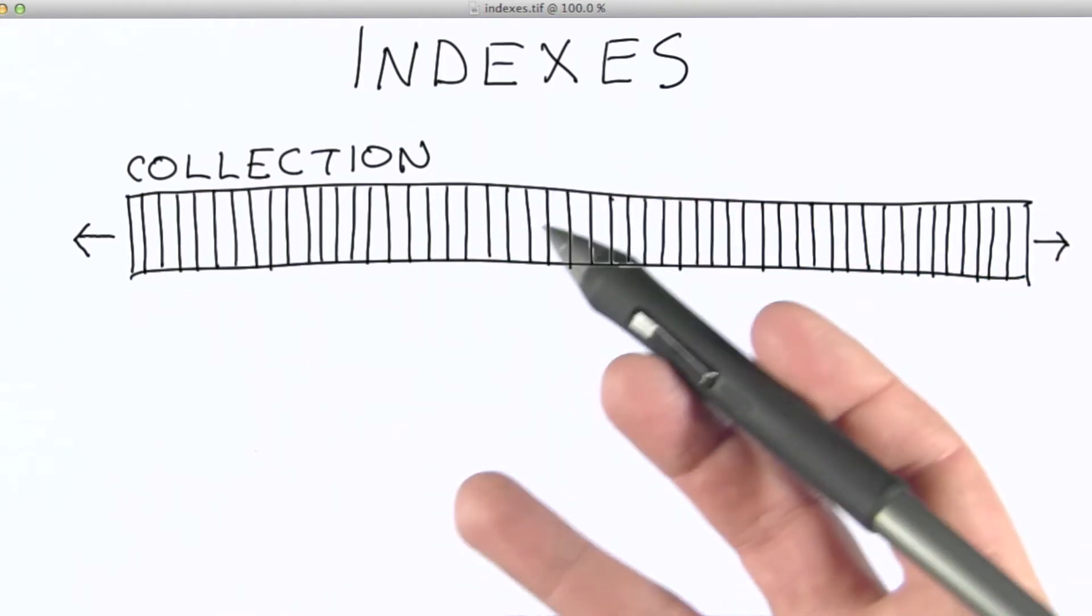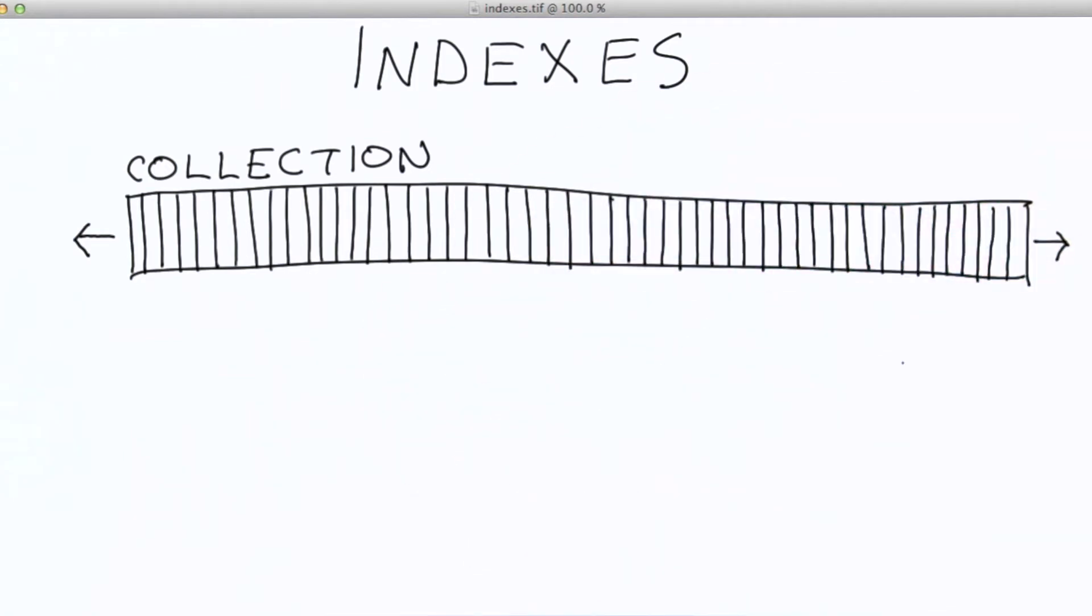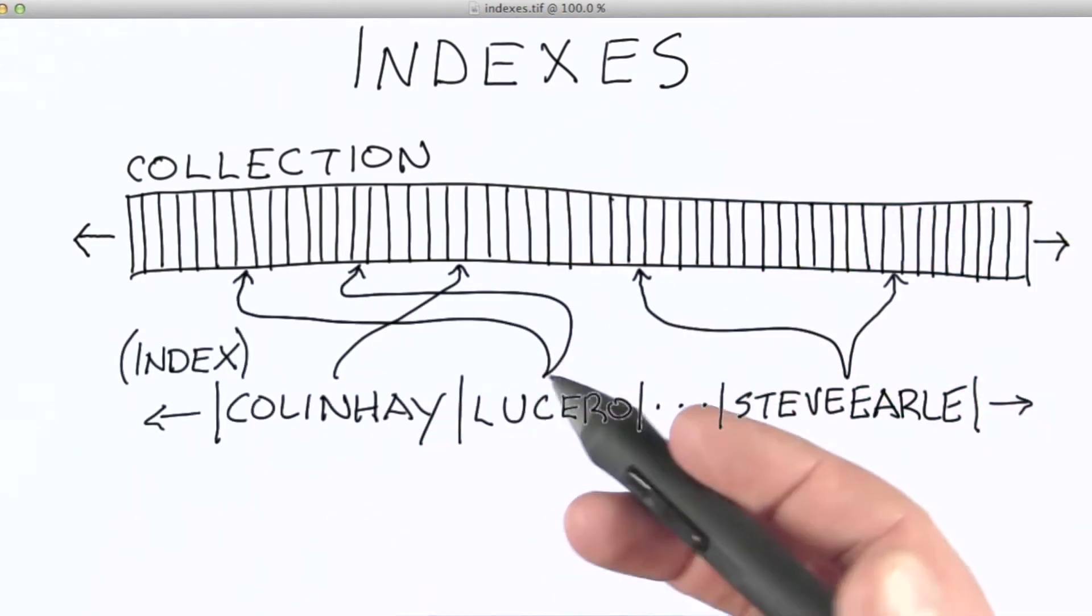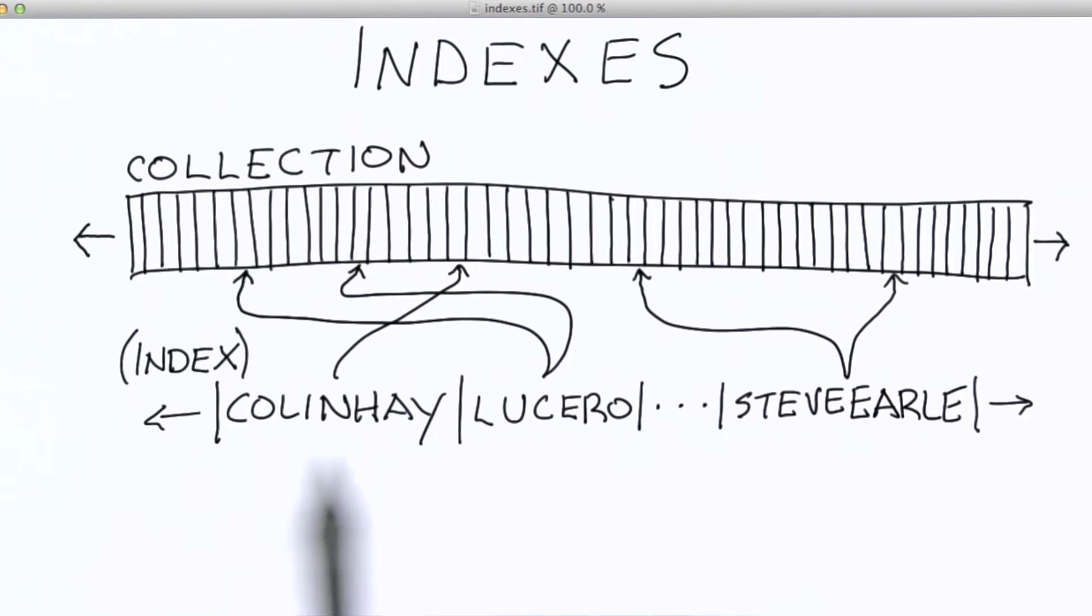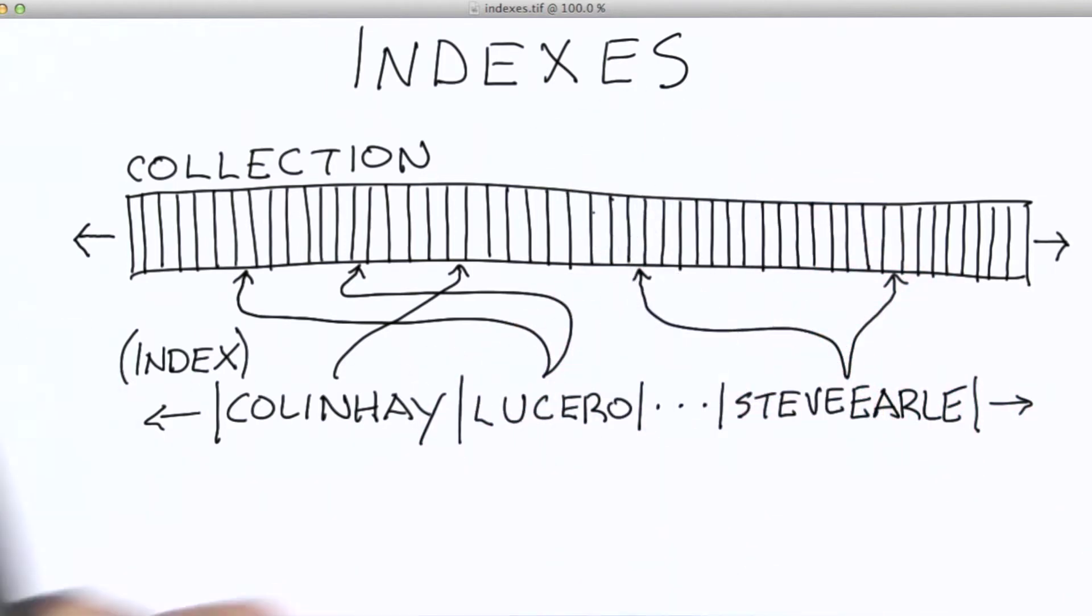So instead what we do is we create an index, or maybe more than one index. So how does indexing work? Well, it's actually pretty straightforward. If something is ordered, like for instance, this list of hashtags, even if it's very long, it's very quick to find something in the list because we can use binary search to do it. So finding something in a sorted list is really quick.